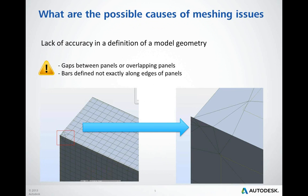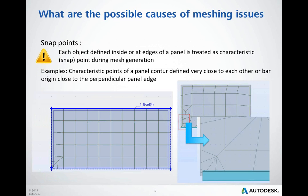From our experience, the most common cause for issues with meshing is by far lack of accuracy in the definition of the geometry of a model. Typical errors include gaps between panels, partially overlapped panels, and parts defined not exactly along edges of panels. It also often happens that contours of panels have additional or inaccurately defined characteristic points. This is most often caused by snapping to other objects than intended, so be careful where you click while defining panels.